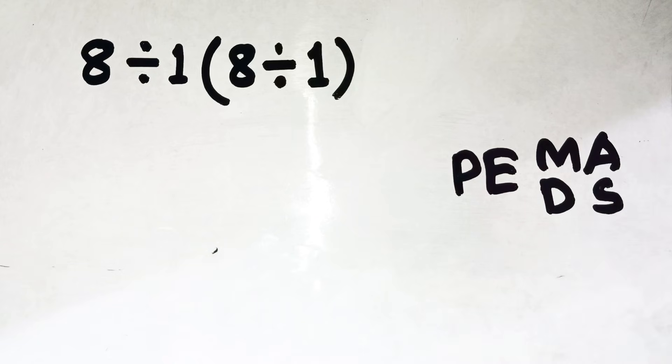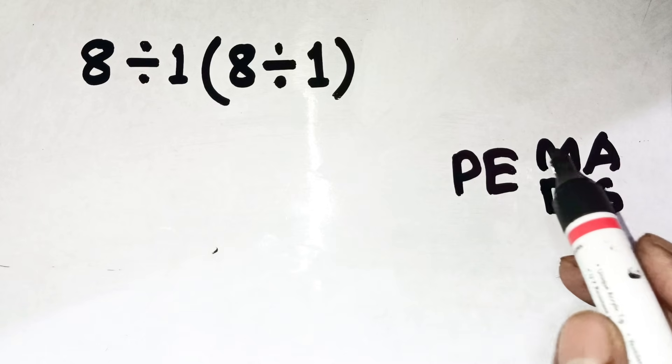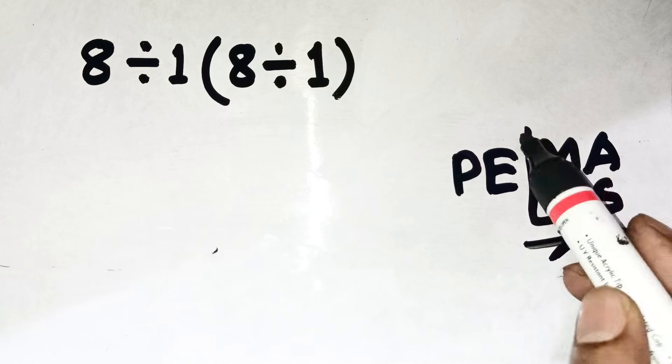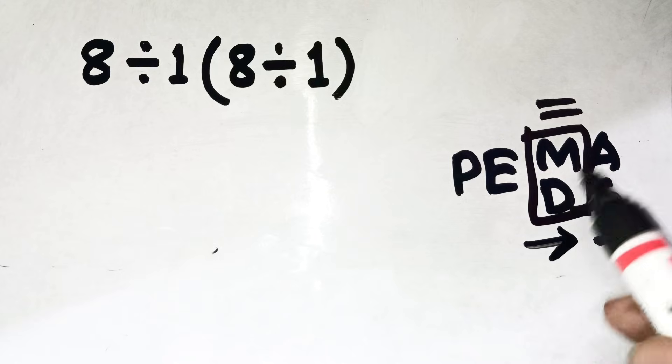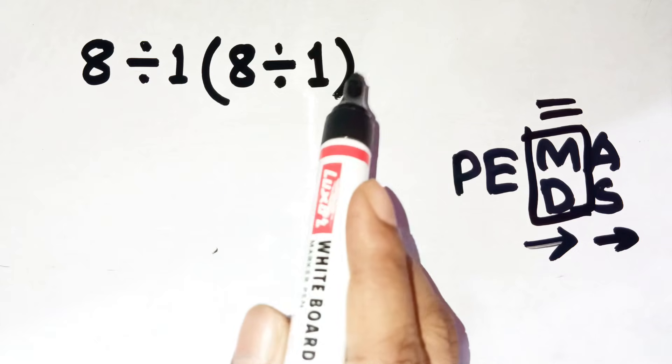So let's slow down and use PEMDAS. Parentheses, exponents, multiplication and division from left to right, and then addition and subtraction from left to right. And remember this part because it's the most misunderstood detail. Multiplication and division share the same priority. You don't do all multiplication first. You do whichever comes first from left to right.